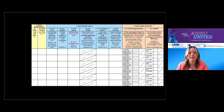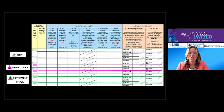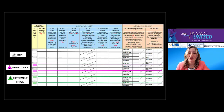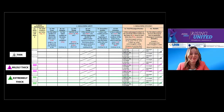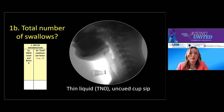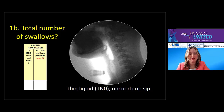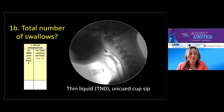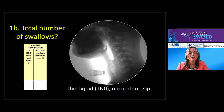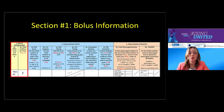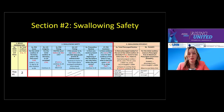Let's dive into our first case — an uncued sip of thin liquids. The first section is bolus information in the yellow column: count the number of swallows in the clip. This bolus was thin, it was the first bolus in our fluoro sequence, and there were two swallows. We then move on to swallowing safety, in blue. ASPECT-C uses a modified eight-point PAS score, broken down into two categories: green, or typical, and red, or atypical. PAS scores of one, two, and four are considered typical because they occur in healthy swallowing and involve no residual material in the laryngeal vestibule after ejection.